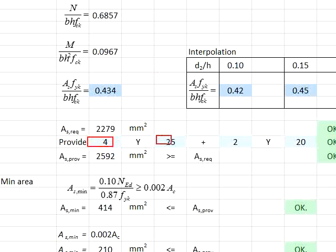Provide 4T25 plus 2T20. You obtain the provided reinforcement bar here. The provided reinforcement bar is more than the As·fyk required.